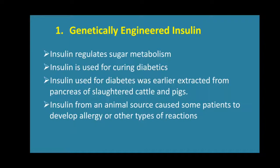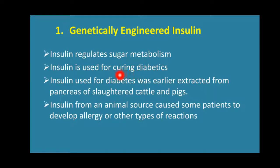If a person is not producing enough insulin, we need to provide insulin from an outside source. If we are able to make insulin, we can administer it by injection to the diabetes patient, since in diabetes insulin is not produced in sufficient amounts.